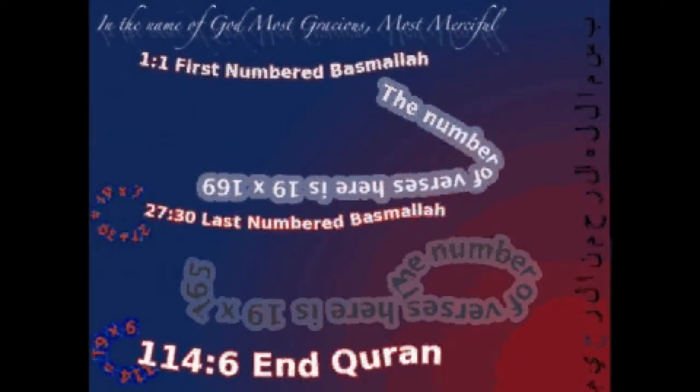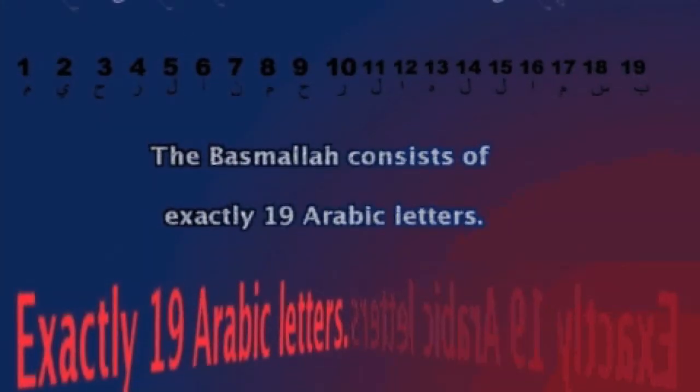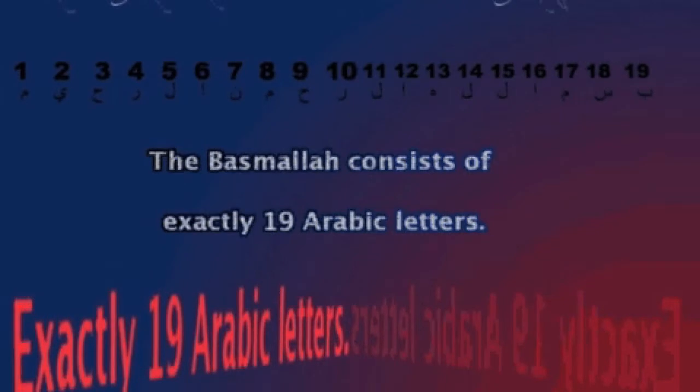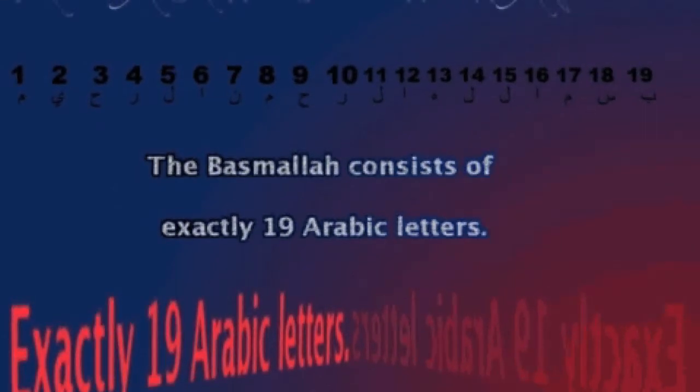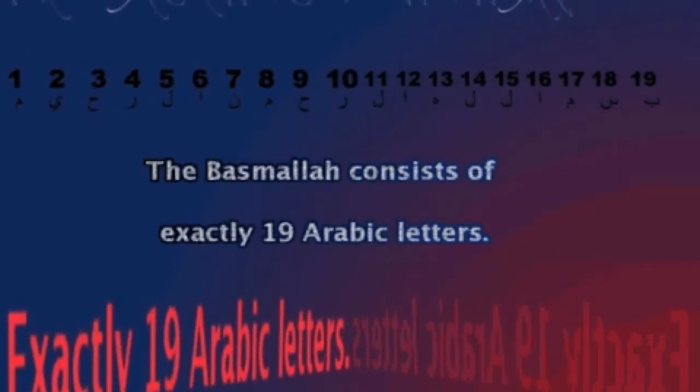The Basmela, on top of the chapters, do not have a number associated with them except the one in chapter 1 verse 1. If you count the number of verses where the four words of the Basmela occur, you'll find exactly 1919, or 19 times 101.